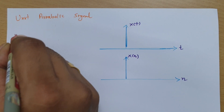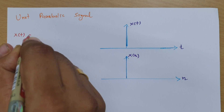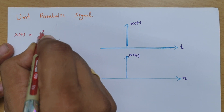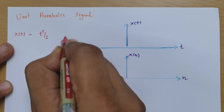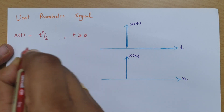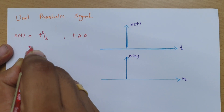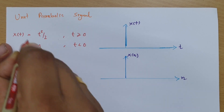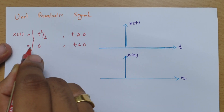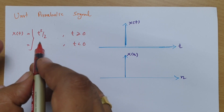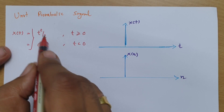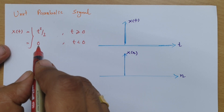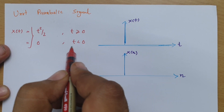The function of the unit parabolic signal is t squared by 2 for t greater than or equal to 0, and it will be 0 for t less than 0. So for continuous time, the function of the unit parabolic signal is t squared by 2 for t greater than or equal to 0, and 0 for t less than 0.